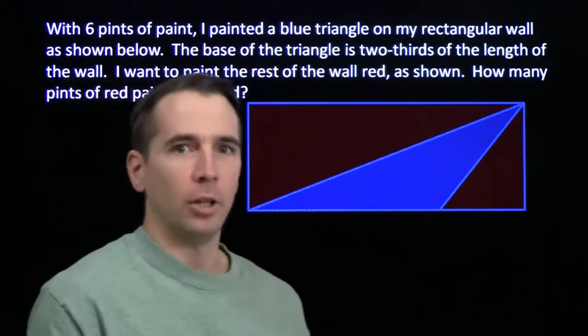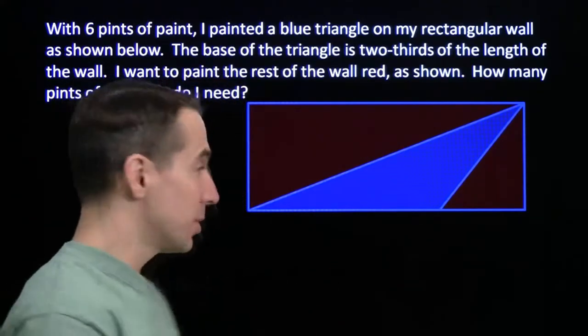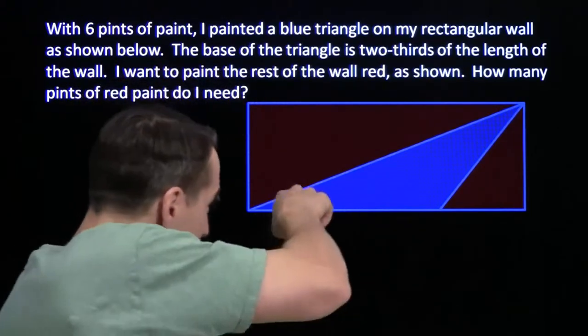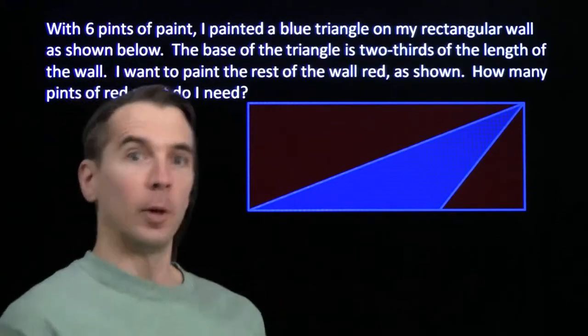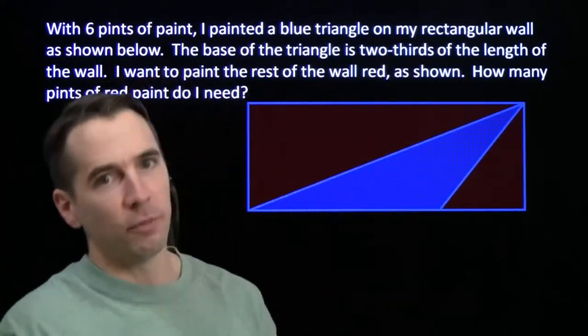But it took a really long time. I didn't do it in the most efficient way possible. I bought one pint of blue paint because I didn't know how much I'd need, and I painted a little bit of the triangle, and I needed more. I went back to the store, bought another pint, came back, painted a little bit more, and back and forth.